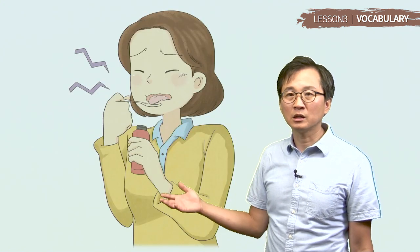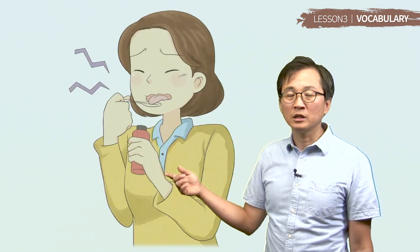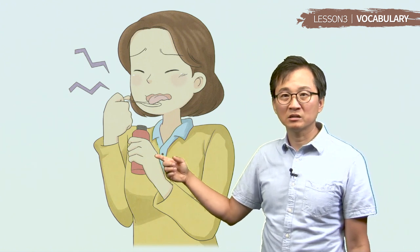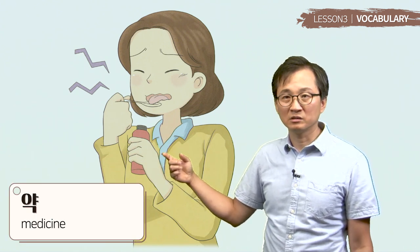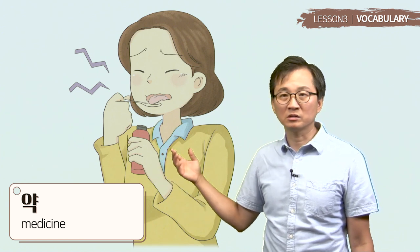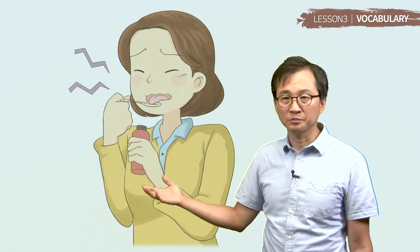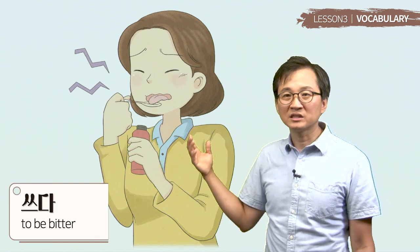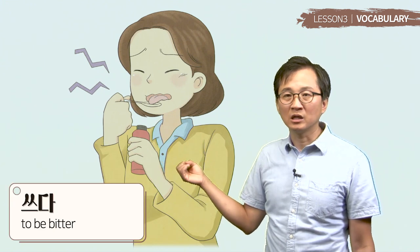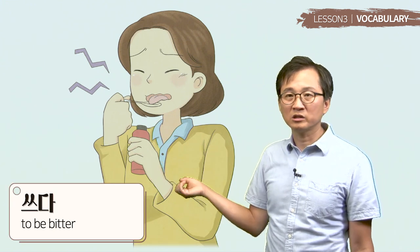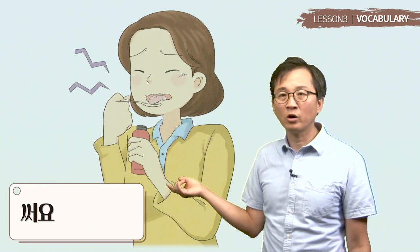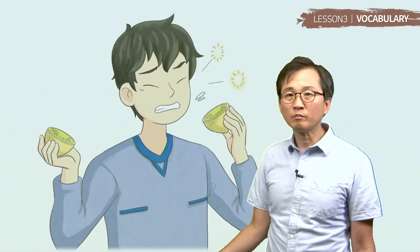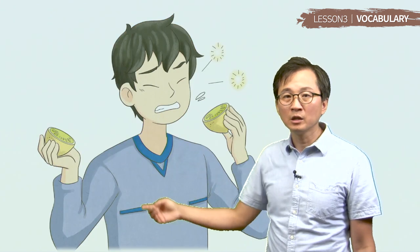그 다음에 이게 뭐예요? 약인가. 약은 medicine. Generally medicine tastes bitter. 그러면 bitter: 쓰다. Its conjugation form 어요/아요 form is 써요.